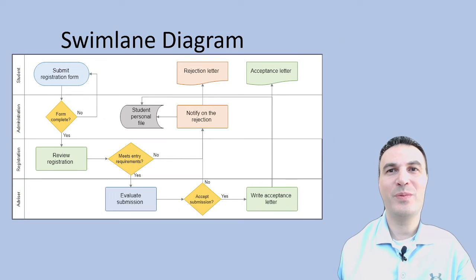Swimlane diagrams organize process steps based on the responsible department or individual. This technique is especially beneficial for cross-functional teams, offering a visual representation of responsibilities within a process. By clearly defining roles and handoffs, organizations can reduce confusion and improve collaboration among team members.